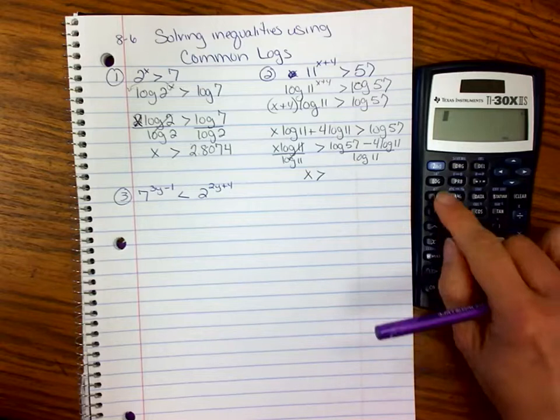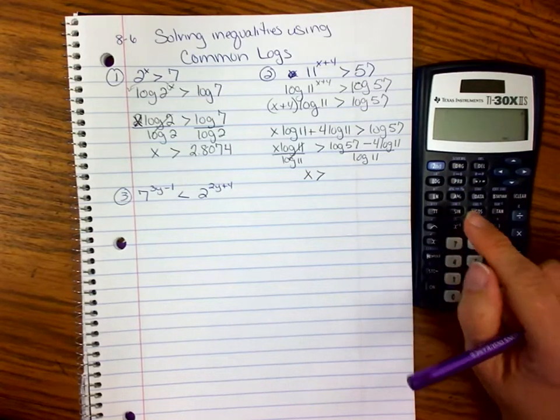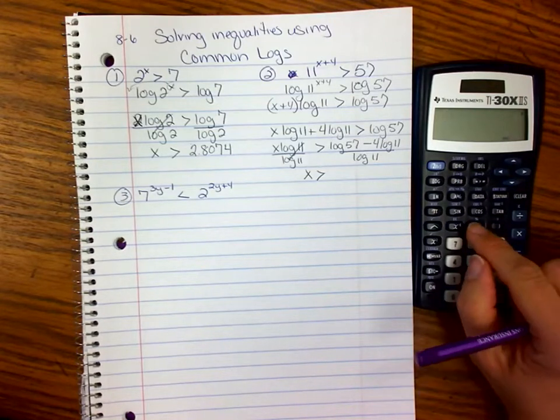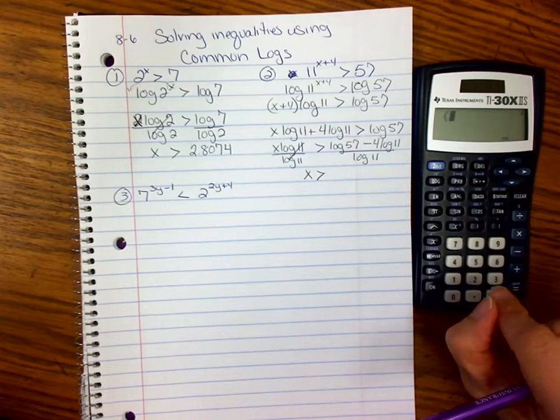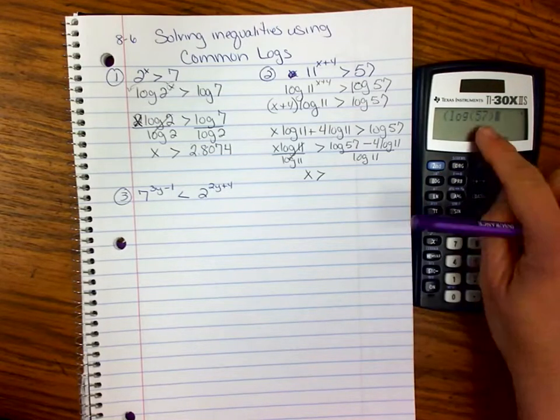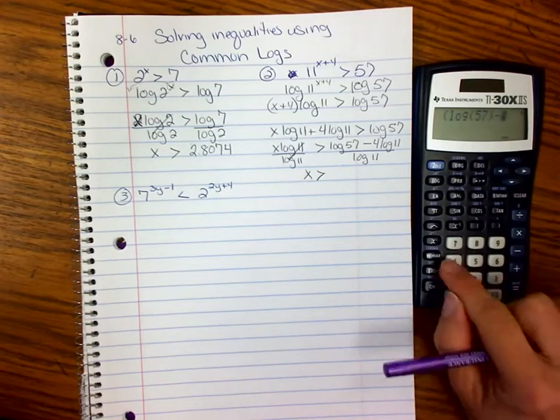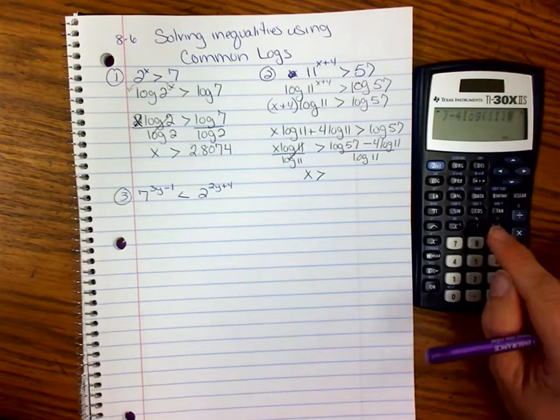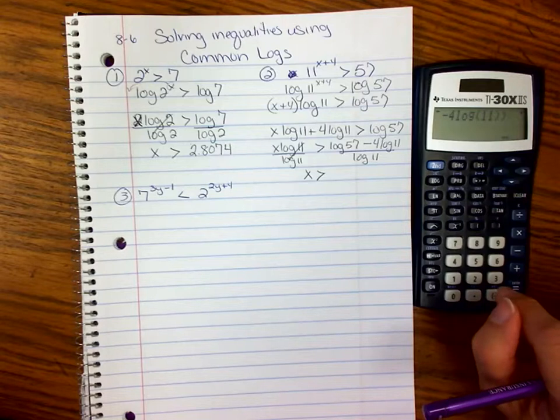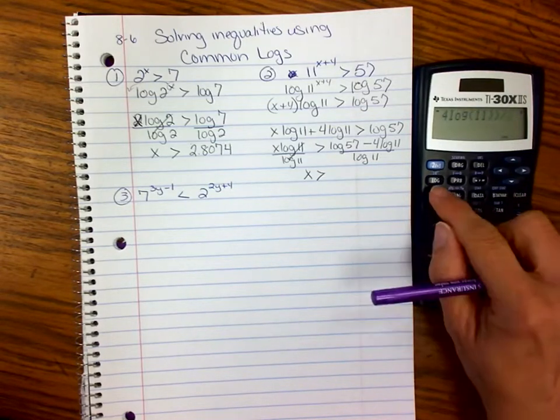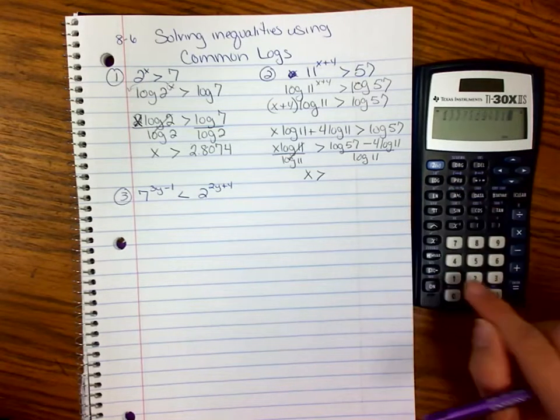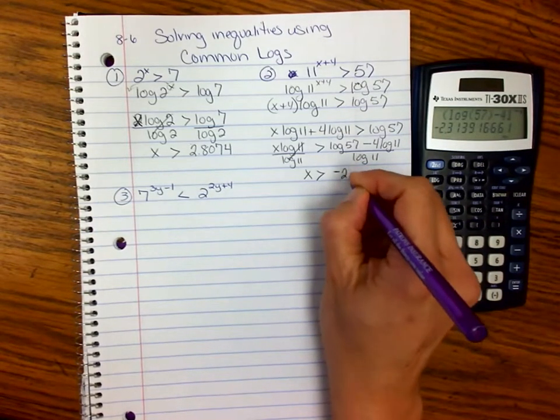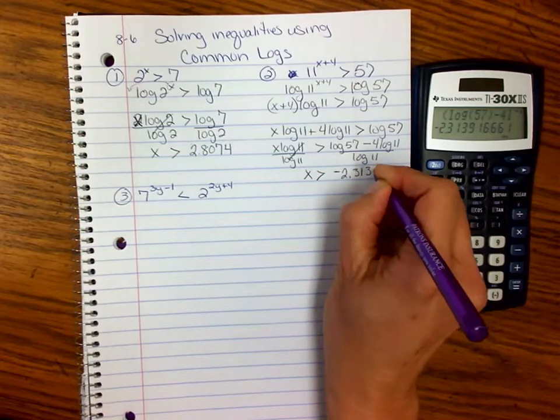Let's figure out what that is. You can do it all at once in your calculator, but you have to be really careful with parentheses. You're going to say parenthesis, because that's the top of the fraction. Log 57, end that parenthesis for that log. Minus 4 times the log of 11. End the parenthesis for the log of 11. And then end the parenthesis for the numerator. Then divide by the log of 11. And you get negative 2.3139.